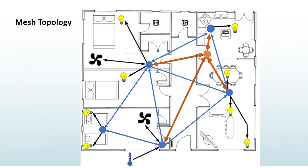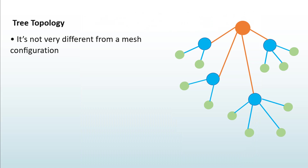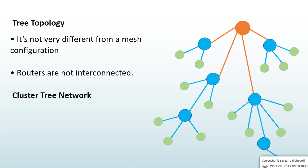Here is an example of a mesh network implemented for home automation. With four, five, or six devices a star topology can still work, but as more devices are added, mesh topology is the right choice. Tree topology is not very different from mesh except that the routers are not interconnected. However, a cluster tree network configuration lets routers connect to expand the range of the network.